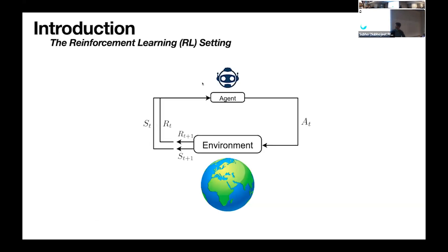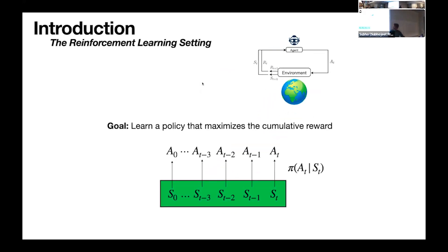We start by introducing the reinforcement learning setting. We have an agent and an environment. The agent interacts with the environment through actions, and by doing so it receives a new state and a reward. The goal in reinforcement learning is to learn a policy — a mapping from states to actions.